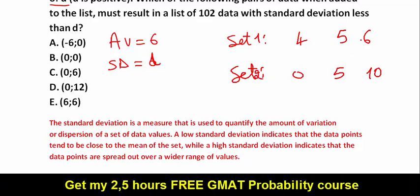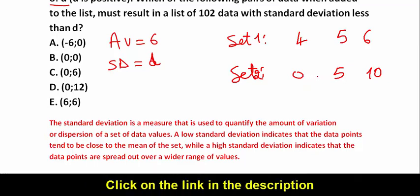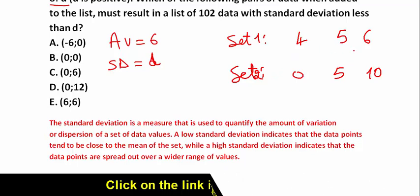But the values in set 1 are close to the mean, while the values in set 2 are spread out over a wider range. So the standard deviation in set 2 is greater than the standard deviation in set 1.